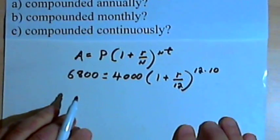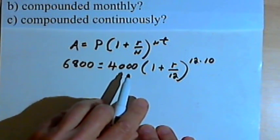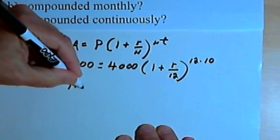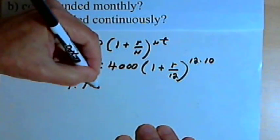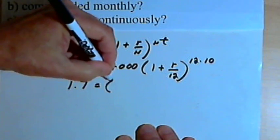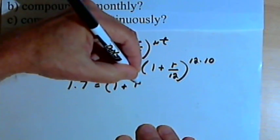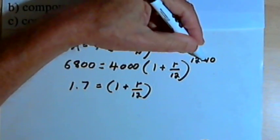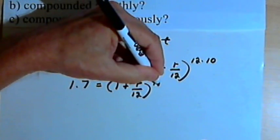So now we want to solve for r. I'll divide both sides by 4,000. When I did that last time, I got 1.7. So I'll just put in 1.7 equals 1 plus r over 12 raised to the 12 times 10. Well, 12 times 10 is 120.